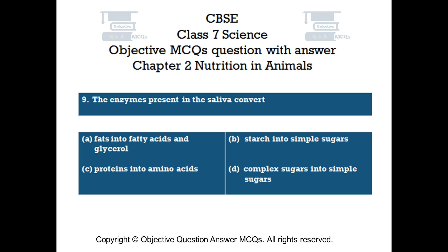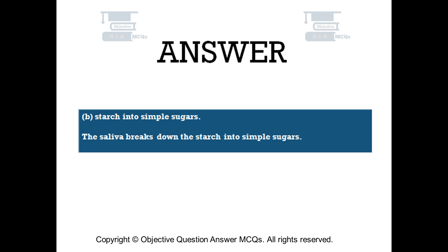Question number 9. The enzymes present in the saliva convert: Option A: Fats into fatty acids and glycerol. Option B: Starch into simple sugars. Option C: Proteins into amino acids. Option D: Complex sugars into simple sugars. The right answer is Option B: Starch into simple sugars. The saliva breaks down starch into simple sugars.